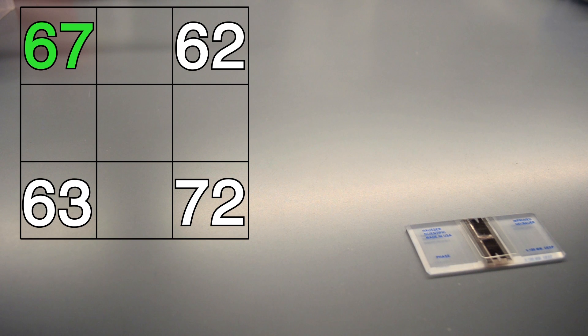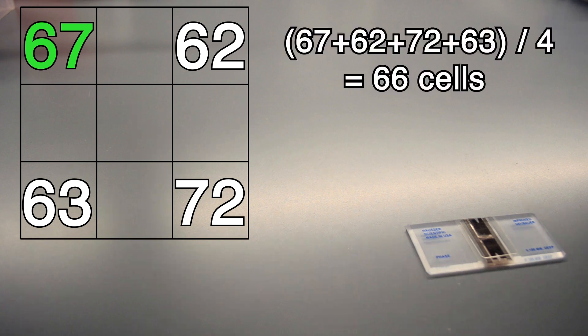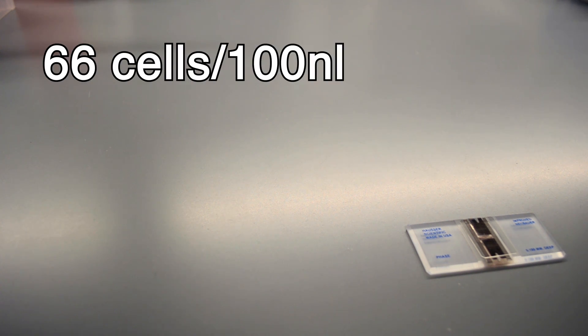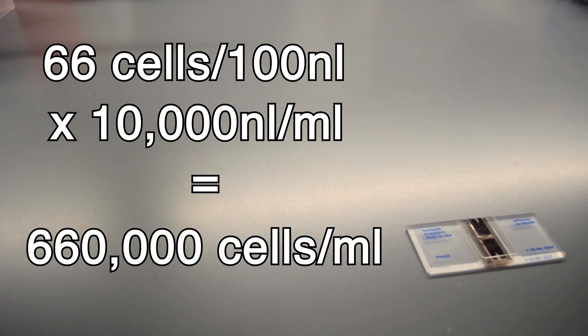You do this for at least four squares and then average your counts together. Since you know that each of these squares is 100 nanoliters, you now have your cells per 100 nanoliter density. You can then multiply this by 10,000 to get cells per milliliter.